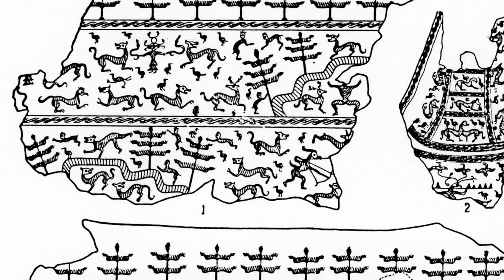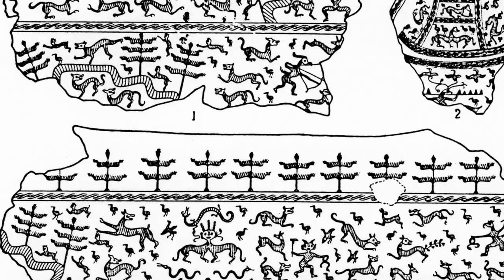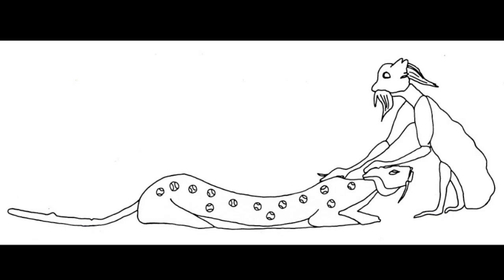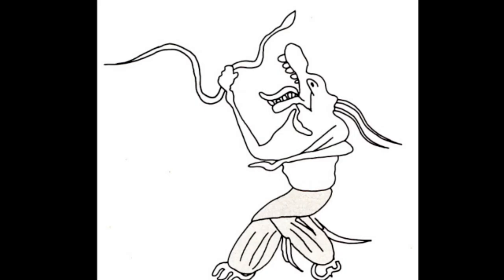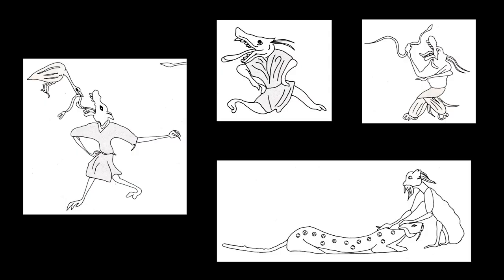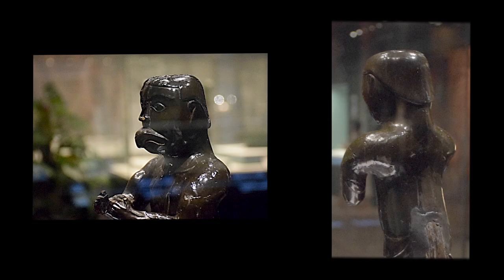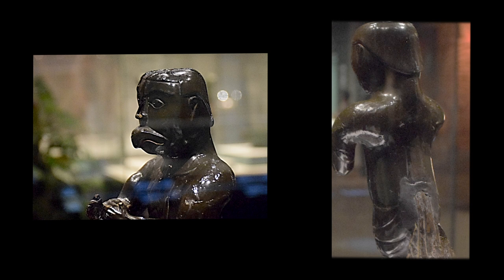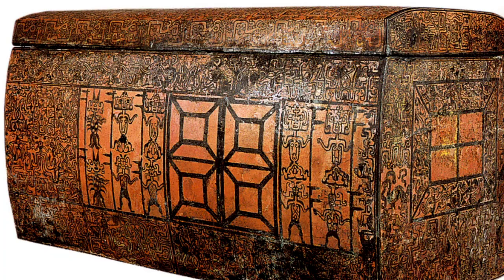Gods, spirits and demons began to be represented in the shape of half-human, half-beast creatures. They may have a posture like human beings, but they have an animal head and they may have clothes at the end of their members. This is one example. Or they may have a human head and an animal body, like gods protecting the coffin of a deceased.